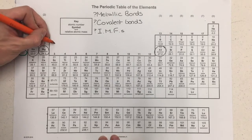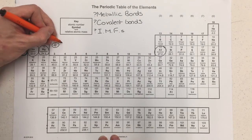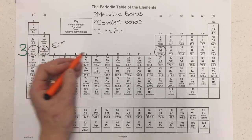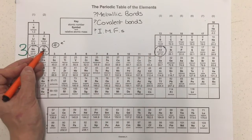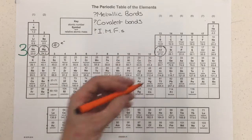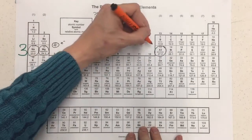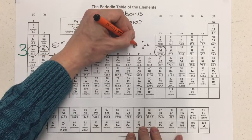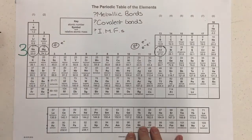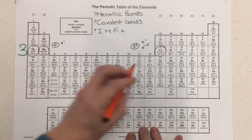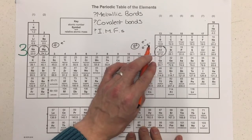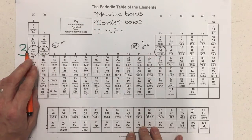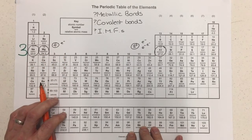The metallic bond, remember, is the attraction of the positive metal cation to the delocalized sea of electrons. As we move across the period going from sodium to magnesium onto aluminium, we see the strength of the metallic bond increasing. That's because for aluminium there are going to be more electrons in the delocalized sea, and the cation is smaller and more highly charged. So aluminium has the strongest metallic bonding and therefore the highest melting and boiling points of the three metals, and sodium has the lowest.